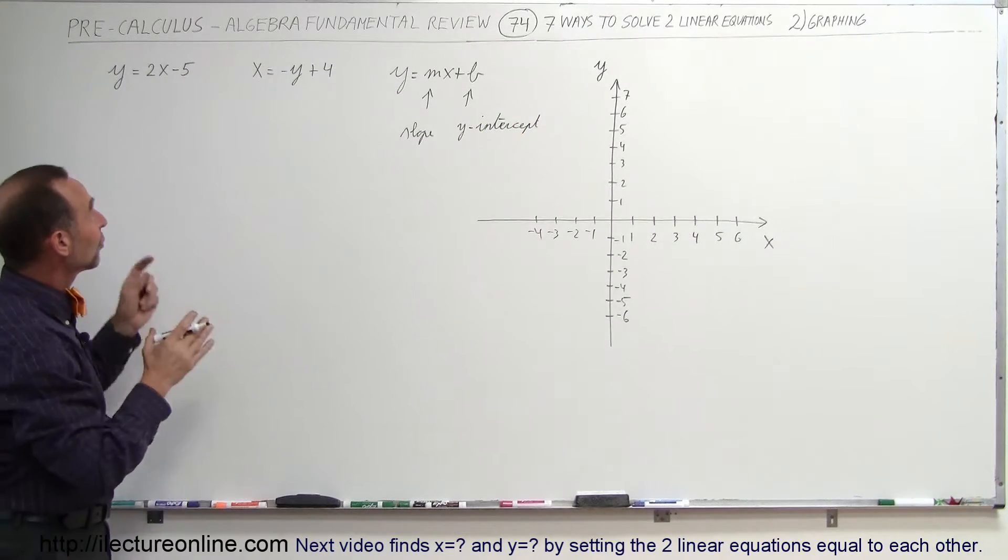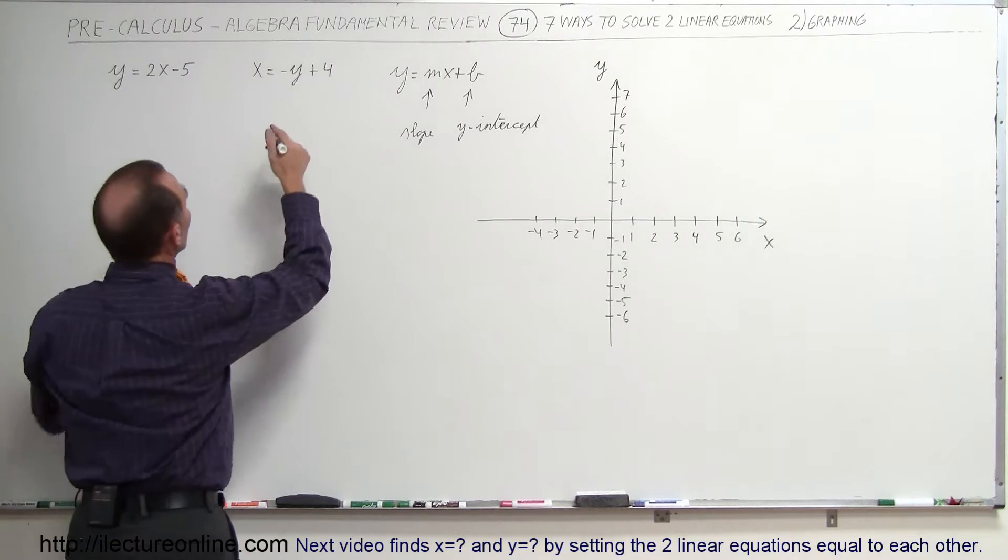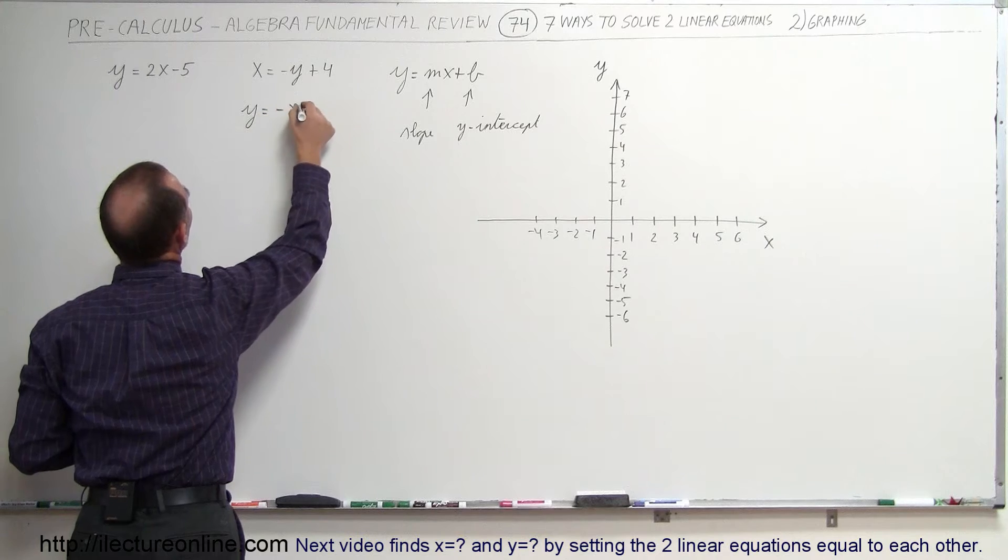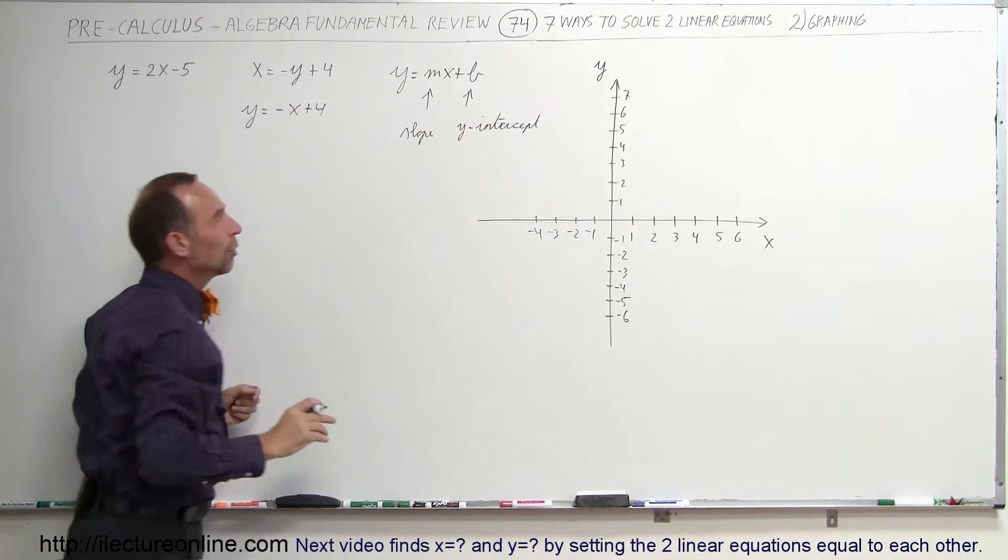So to do that, we have to write the equation in terms of y equals 2x minus 5 like this. So here we're going to change the equation around so y is equal to minus x plus 4. Now you can see that both equations are in the correct format.